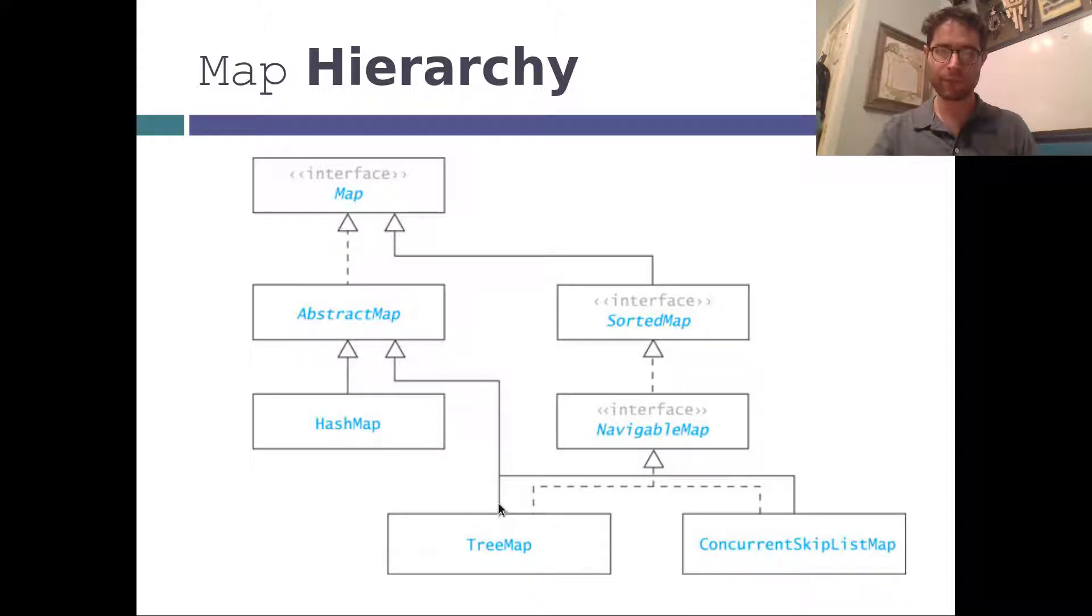You can use a tree map to implement all the methods for a map in log n time. But we're going to assume we're using a hash map in all these discussions about maps, which means that we can do this all in constant time operations. But with the tree map, if things are sortable, we can keep them sorted.